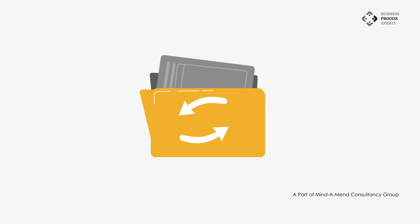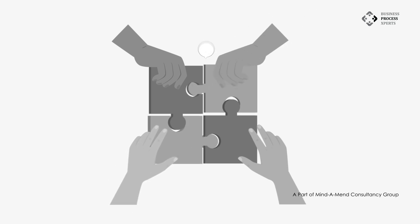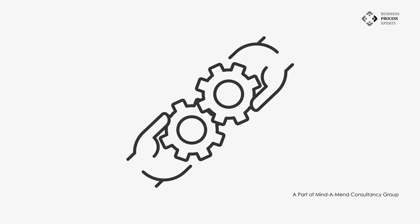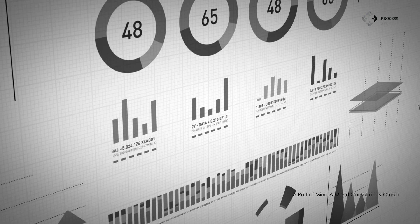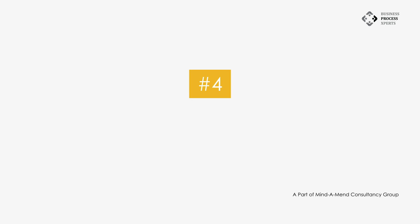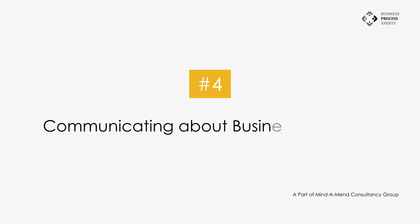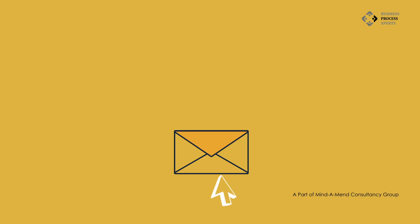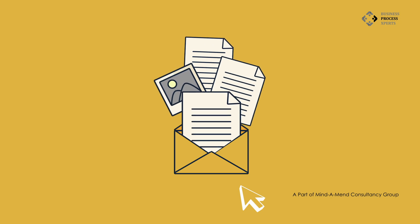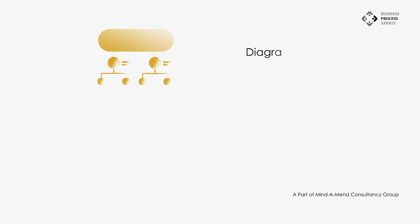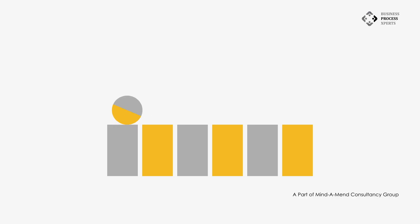Number three: improving business processes. SAP Signavio can be used to improve business processes by making changes to the models. This can be done by collaborating with stakeholders, testing changes, and implementing them. Number four: communicating about business processes. SAP Signavio can be used to communicate about business processes to stakeholders by creating diagrams, reports, and presentations, helping ensure everyone understands the process and can contribute to its improvement.